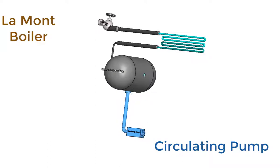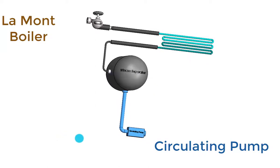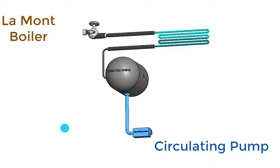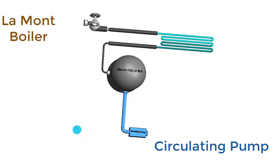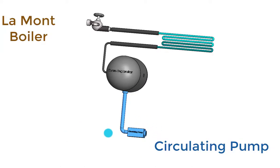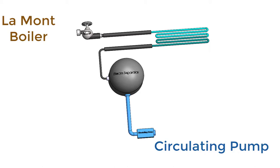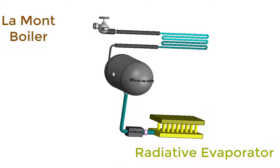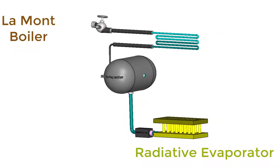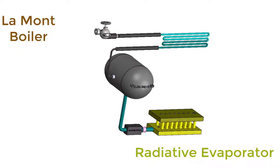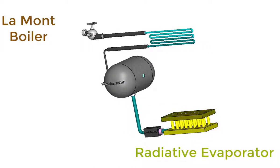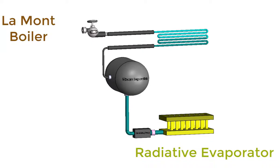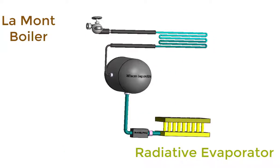Water from the steam separating drum is drawn by the circulating pump and it circulates water through evaporator tubes under pressure, because the Lamont boiler is a forced circulation boiler and for that it needs a circulating pump. Now the radiant evaporator — water from the drum enters the radiant evaporator through the circulating pump. The water is heated by radiant heat from the combustion chamber. Generally, the radiant tubes are attached to the walls of the refractory structure near the furnace.